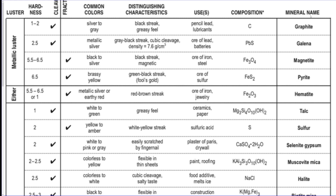Last but not least, make sure you know your mineral chart. We have the hardness column, the luster column, the breakage pattern column, the colors, some distinguishing interesting characteristics, streaks and other characteristics, what it's mostly used for, the chemical formula which is called composition, and then finally your mineral name. Thanks for joining me on minerals. Good luck, see you later!